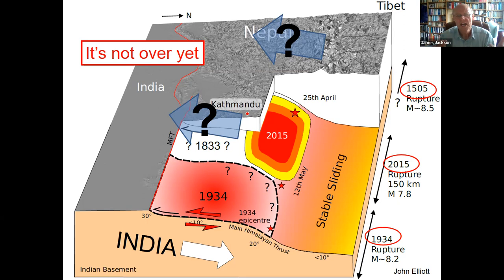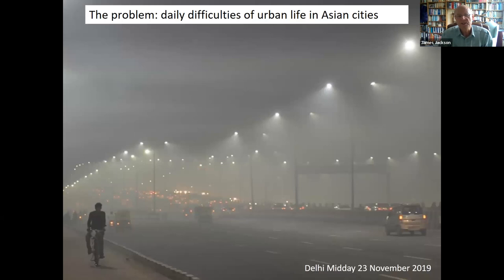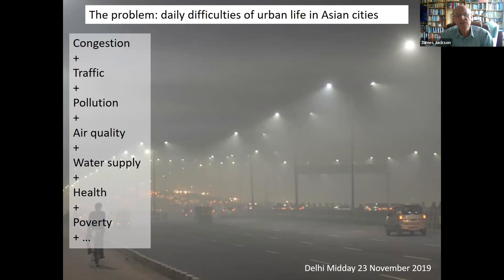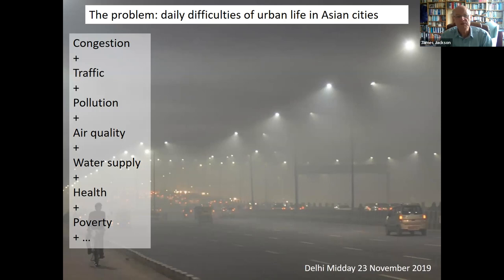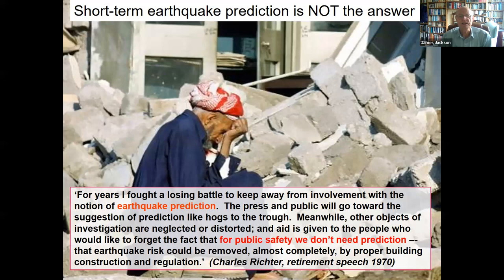The problem is when you talk to people responsible for public safety — here's Delhi at midday in awful air quality — they say every day we cope with traffic, pollution, congestion, air quality. The last earthquake was a couple of hundred years ago, forget it. Earthquakes have a very low priority. And almost inevitably when a big earthquake happens they hope it's a scientific problem that scientists will solve — meaning they hope one day scientists will say 'it's going to be Wednesday at 2 o'clock.' That is something we cannot do. Short-term earthquake prediction is not the answer to this.